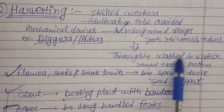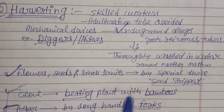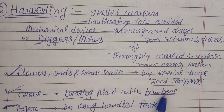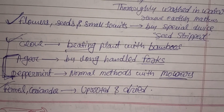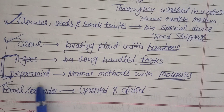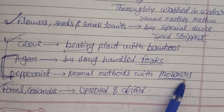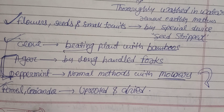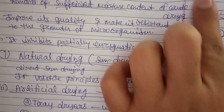For flowers, seeds, and small fruits, special devices like seed strippers can be used. For clove, beating the plant with bamboos separates the clove buds from the parent plant. Agar can be harvested using long-handled forks. Peppermint is cut using mowers. Fennel and coriander are uprooted and dried. Writing answers with specific crude drug examples makes them easy to remember and impresses examiners.